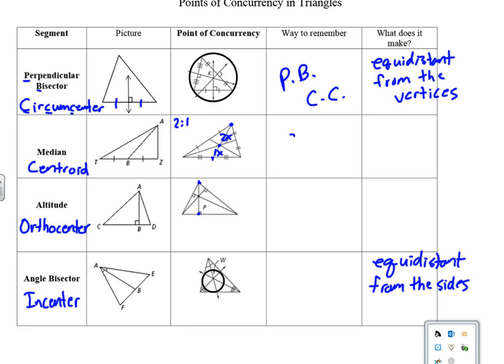Perpendicular bisectors meet at the circumcenter. 2E, the medians meet at the centroid. Double T. And then we have AB is in. So what's the double T from? Well, the altitudes and the orthocenter have two T's. And then the angle bisectors meet at the incenter.